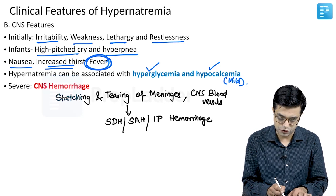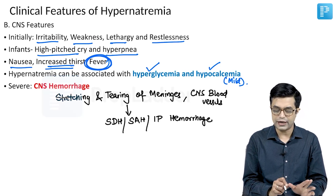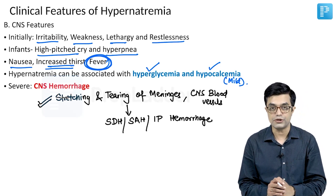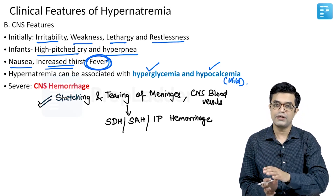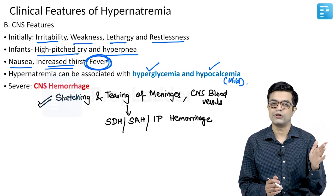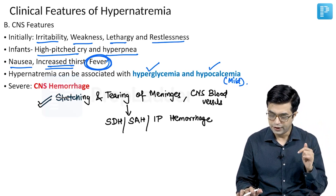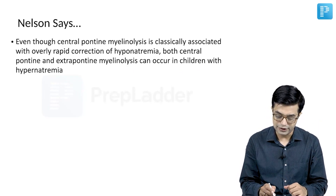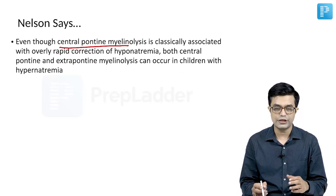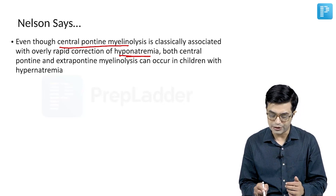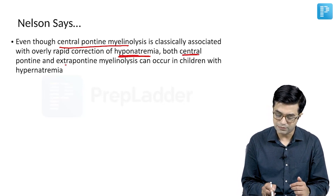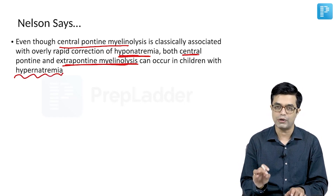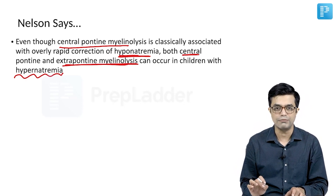This leads to the development of subdural hemorrhage, subarachnoid hemorrhage, or intraparenchymal hemorrhage in patients with severe sudden-onset hypernatremia. Additionally, Nelson notes that while central pontine myelinolysis is classically associated with correction of hyponatremia, both central and extrapontine myelinolysis have been reported in children with hypernatremia as well, as a rare complication.